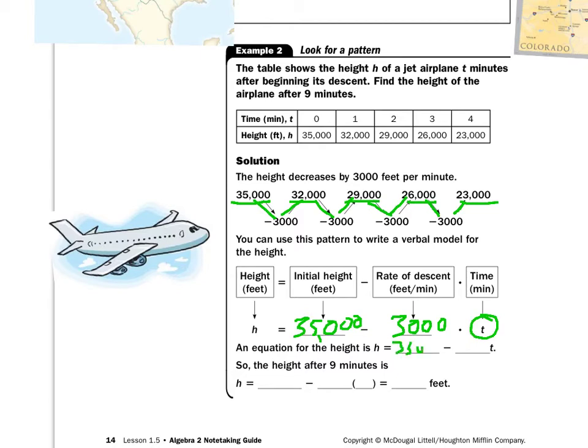35,000 minus 3,000t. And to figure out after 9 minutes, I'm just going to put a 9 in there for t. So, if I do 9 times 3,000, I get 27,000. So, after 9 minutes of descending, my plane is still 8,000 feet above the ground. And so, again, real world problem, kind of thing that you'd probably like to know.